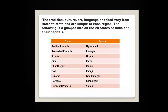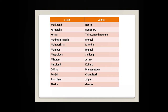First of all, we are going to learn about the capitals, and students, you are going to memorize the states and their capitals. Andhra Pradesh — Hyderabad. Arunachal Pradesh — Itanagar. Assam — Dispur. Bihar — Patna. Chhattisgarh — Raipur. Goa — Panaji. Gujarat — Gandhinagar. Haryana — Chandigarh. Himachal Pradesh — Shimla. Jharkhand — Ranchi.